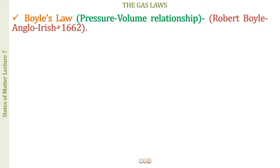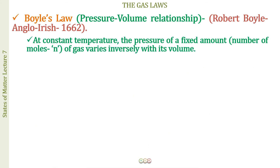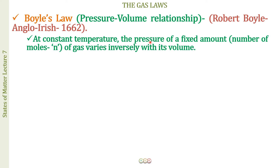Boyle's law was given by a scientist, Robert Boyle. He was an Anglo-Irish scientist and he gave this law in the year 1662. It gives us a relationship between pressure and volume at constant temperature and constant mass of the gas. Let us quickly see the statement: at constant temperature, the pressure of a fixed amount of gas varies inversely with its volume.